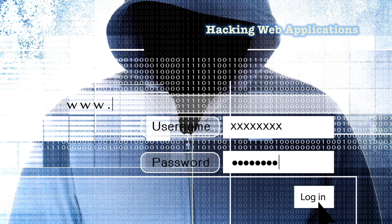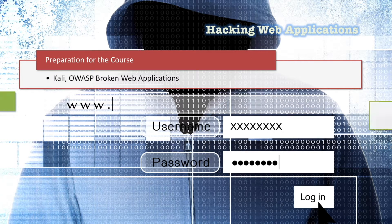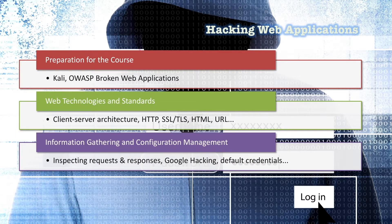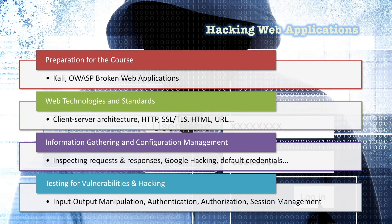In the Hacking Web Applications section, we'll first be prepared and talk about technologies and standards used in web applications. Then we'll learn how to collect information about the website, collect everything we find, and try to use it to hack the app. While discovering the website, we analyze the configurations of the mechanisms used. The vulnerabilities and attack methods are classified according to OWASP — the Open Web Application Security Project and one of the most important communities about application security. We manipulate inputs and push the application to produce unexpected outputs, then compromise the authorization, authentication, and session management mechanisms of the application.